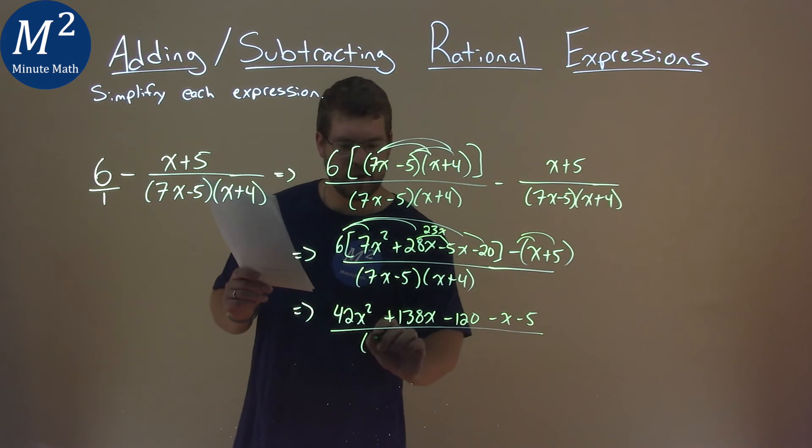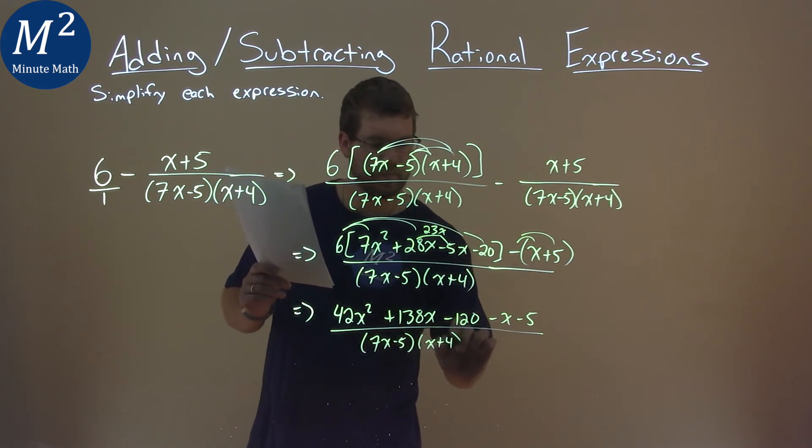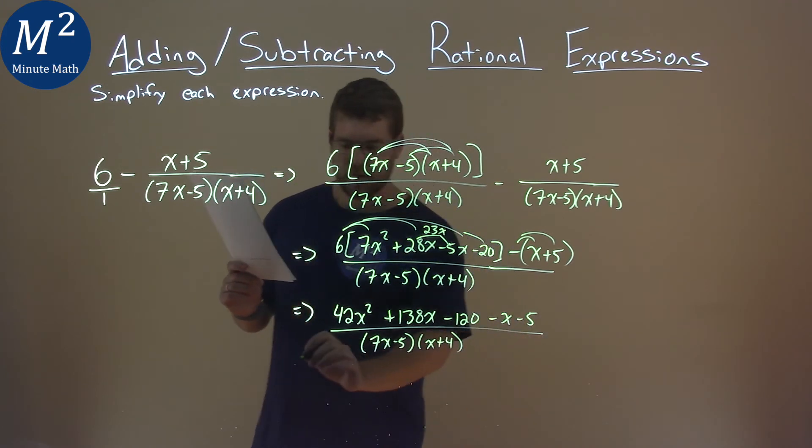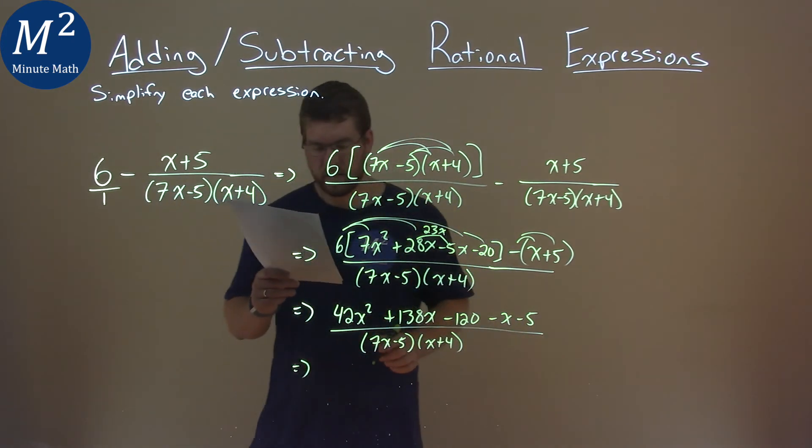All over that big old denominator, 7x minus 5, and x plus 4. Lastly here, let's combine our like terms.